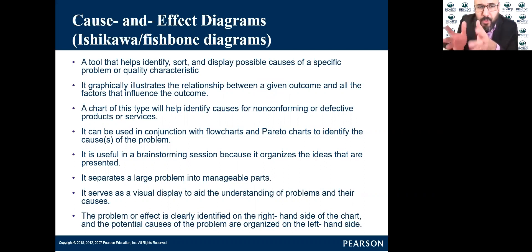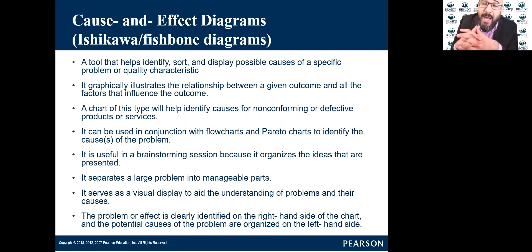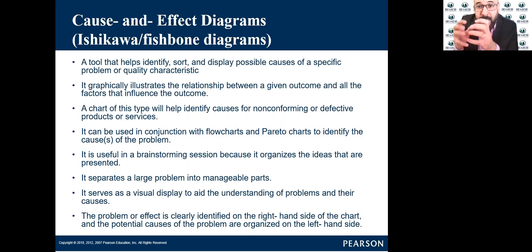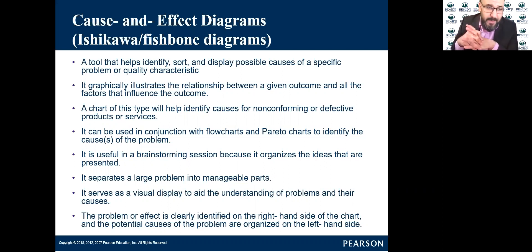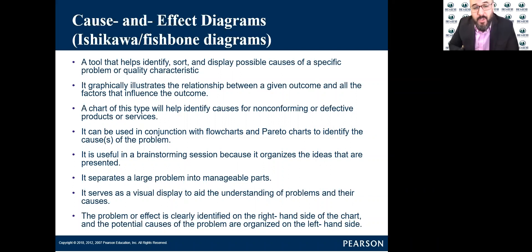It is a graphical tool that illustrates the relationship between a given outcome and all the factors that influence the outcome. This is a unique tool because it will show you the relationship between cause and effect — the outcome and the factors that will affect and influence the outcome. A chart of this type helps identify causes for non-conforming or defective products or services, and it can be used in conjunction with flow charts and Pareto charts to identify the causes of the problem.